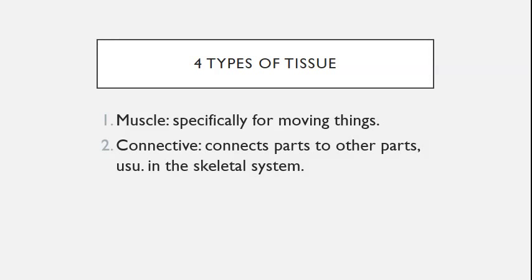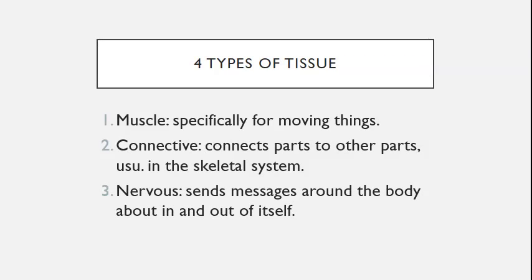The third tissue is nervous tissue. Nervous tissue is responsible for receiving and sending information about your body's internal and external environments. The brain, spinal cord, and all neurons are nervous tissue.